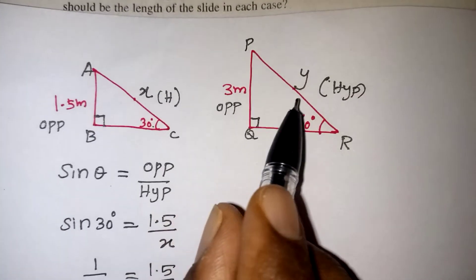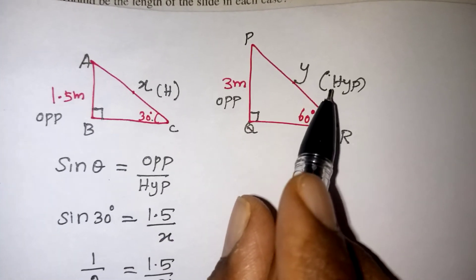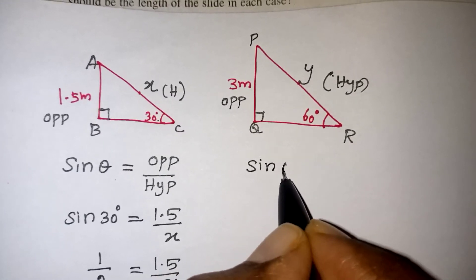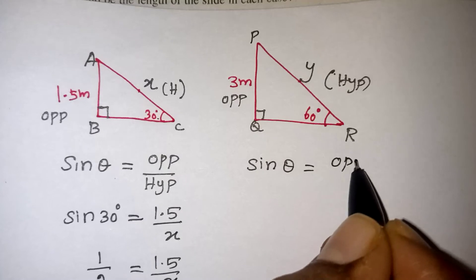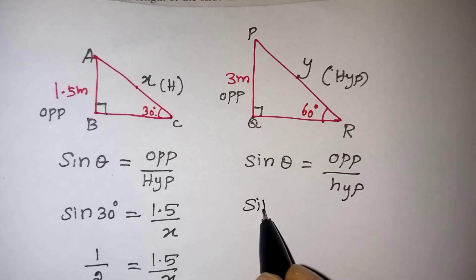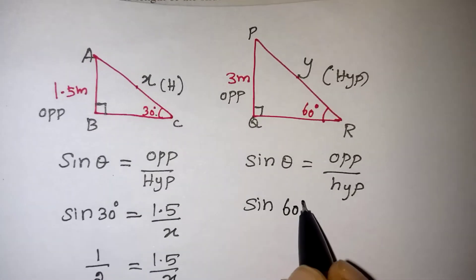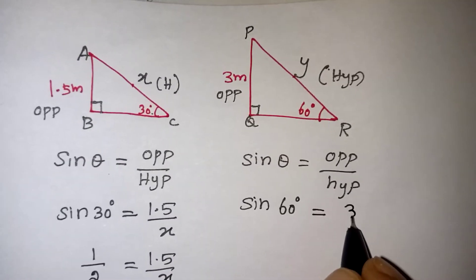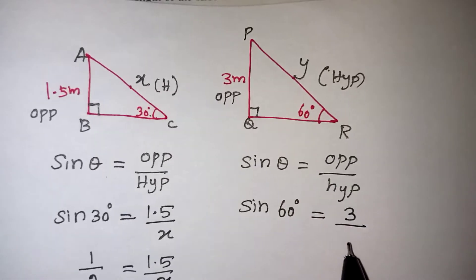So this angle is given. Opposite side is given. Hypotenuse side we need to find out. So theta with opposite and hypotenuse, again it will be sin theta only. Sin theta is equal to our formula opposite by hypotenuse side. Sin in the place of theta we have 60 degree, which is equal to opposite side is given as 3. Hypotenuse side is Y.